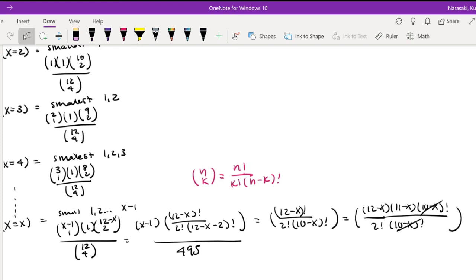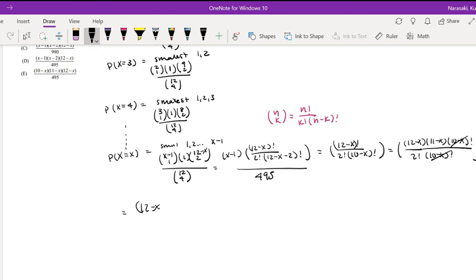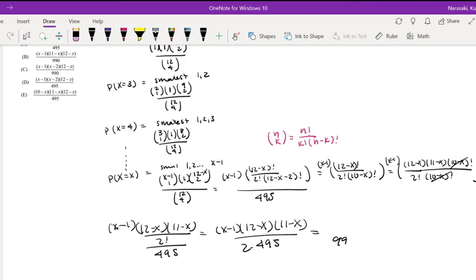So then the numerator, I'm going to bring it back to this side. So the numerator is equal to 12 minus x, 11 minus x over 2 factorial over 495. Oh wait, I forgot my x minus 1 here. Oops, sorry about that. So then this is equal to x minus 1 times 12 minus x times 11 minus x over 2 factorial is 2 times 495, which is equal to 990. Over x minus 1 times 12 minus x times 11 minus x, which is our answer, B.